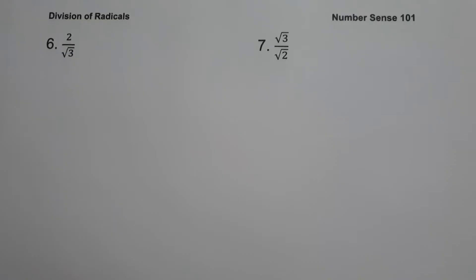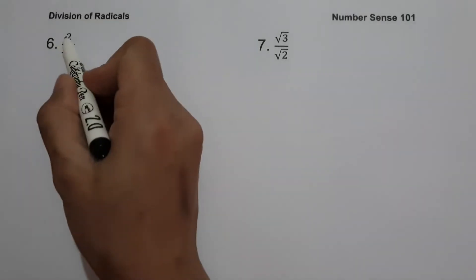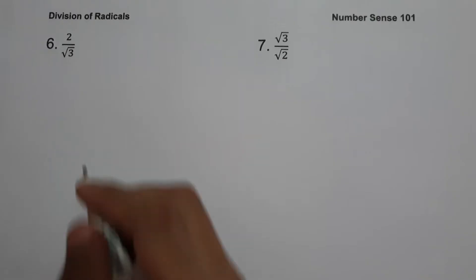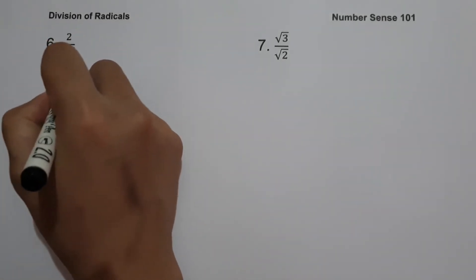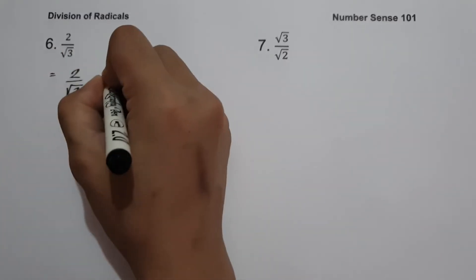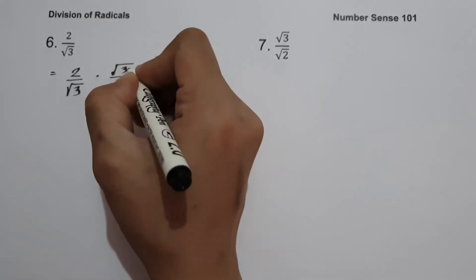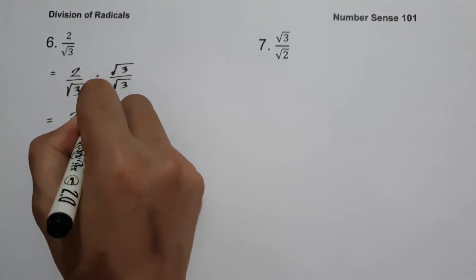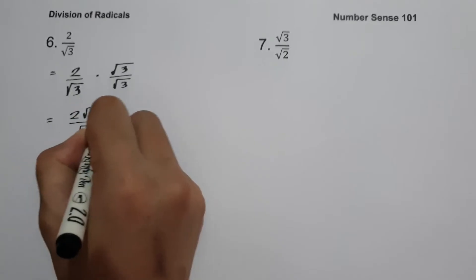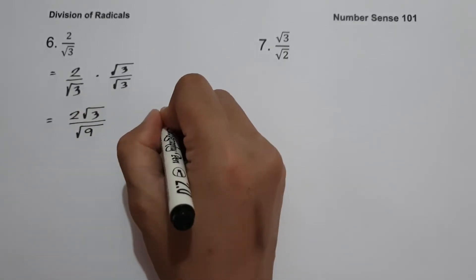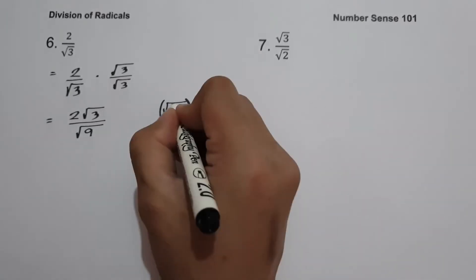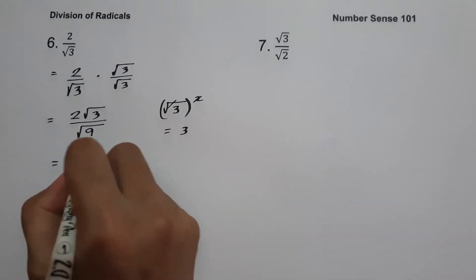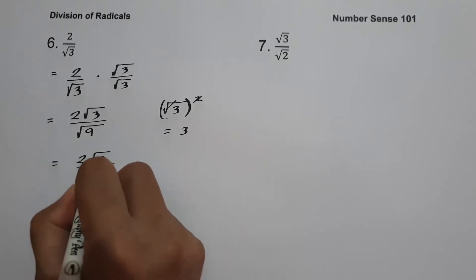On example number six, we have 2 over square root of 3. Since we can't divide the numerator and denominator directly, let us rationalize the denominator to eliminate the radical sign. We multiply the numerator and denominator by square root of 3. This gives 2 times square root of 3, which is 2 square root of 3, over square root of 3 times square root of 3, which is square root of 9, or 3. So the answer is 2 square root of 3 over 3.